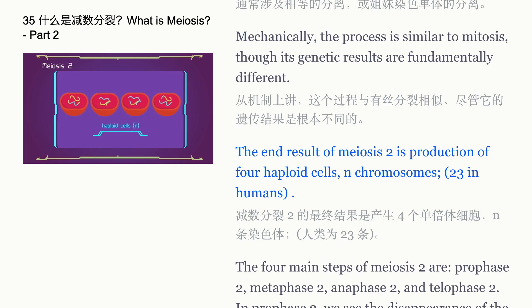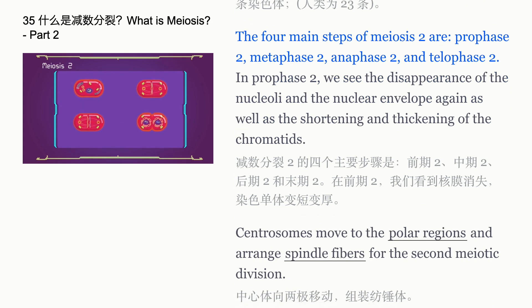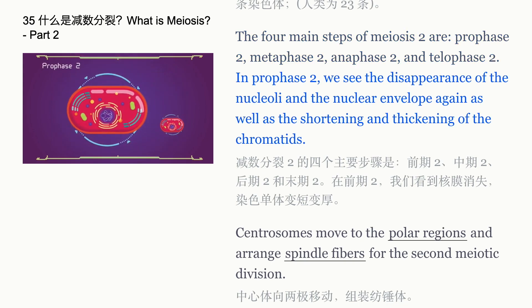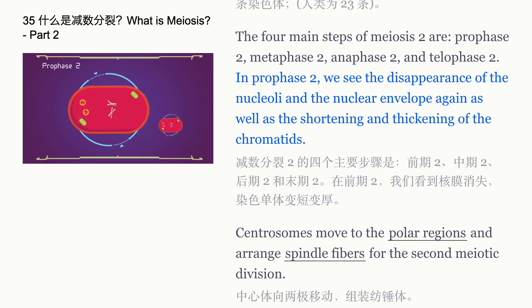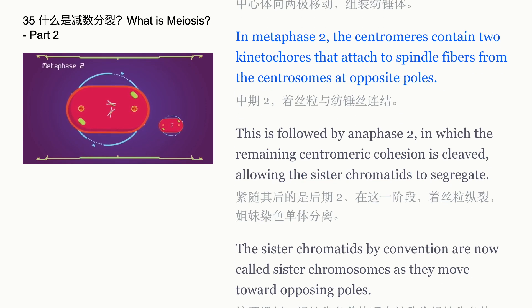The four main steps of meiosis II are prophase II, metaphase II, anaphase II, and telophase II. In prophase II, the nucleoli and the nuclear envelope disappear again, and the chromatids shorten and thicken. Centrosomes move to the polar regions and arrange spindle fibers for the second meiotic division. In metaphase II, the centromeres contain two kinetochores that attach to spindle fibers from the centrosomes at opposite poles.